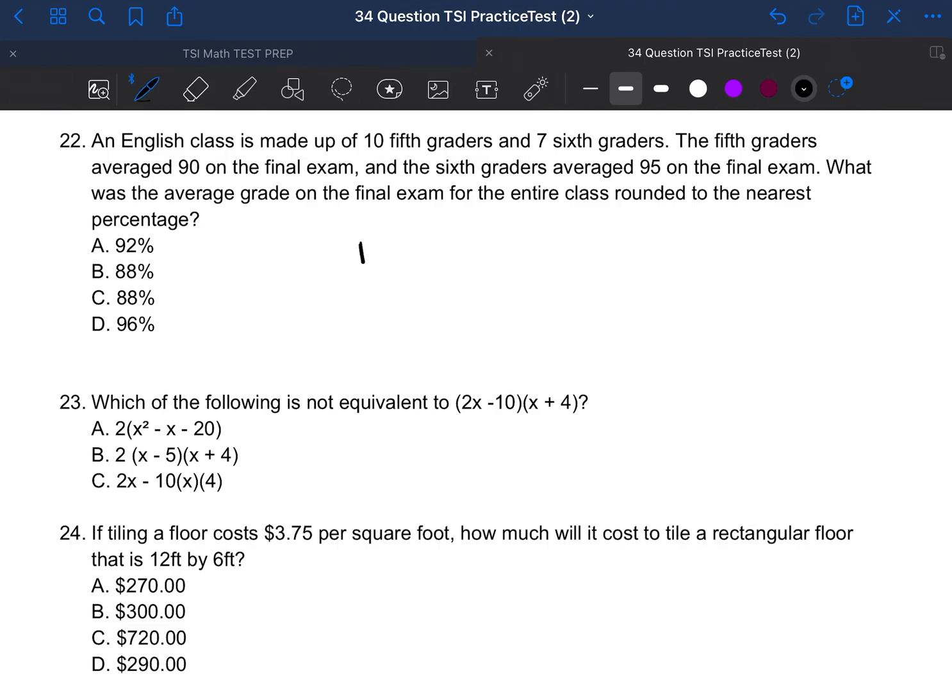So we have fifth graders and we have sixth graders. There are 10 fifth graders and there are 7 sixth graders. The fifth graders, they averaged 90% on their test and the sixth graders averaged 95% on their test. And then they want us to have the average grade for the entire class.